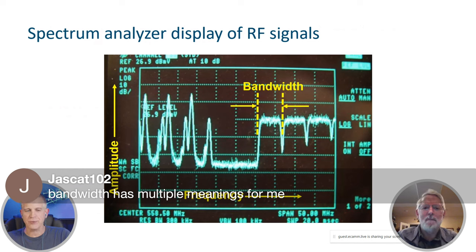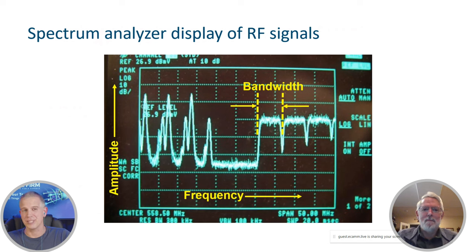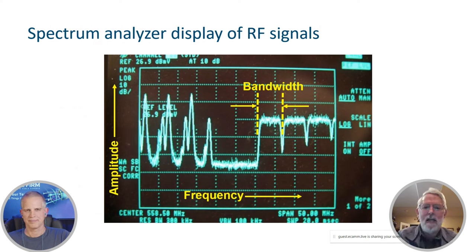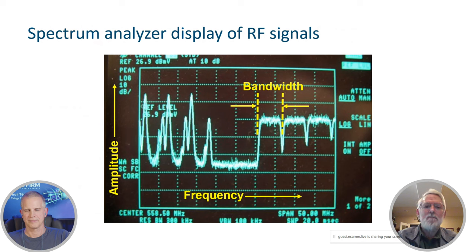Bandwidth has multiple meanings. In the world of RF, bandwidth is the amount or width of the spectrum, measured in units of hertz, that an electromagnetic signal occupies. On a spectrum analyzer, you can see three different parameters: amplitude on the vertical axis, frequency on the horizontal axis, and bandwidth — for example, a six-megahertz-wide single carrier QAM signal. If you work in the data world, you might define bandwidth as bits per second, but in RF, bandwidth is measured in hertz.